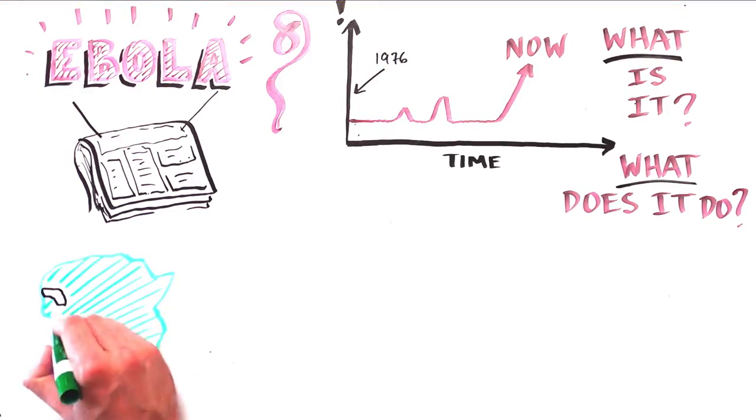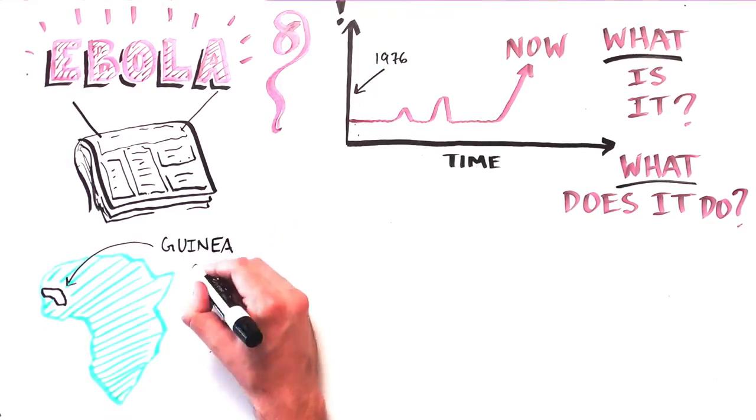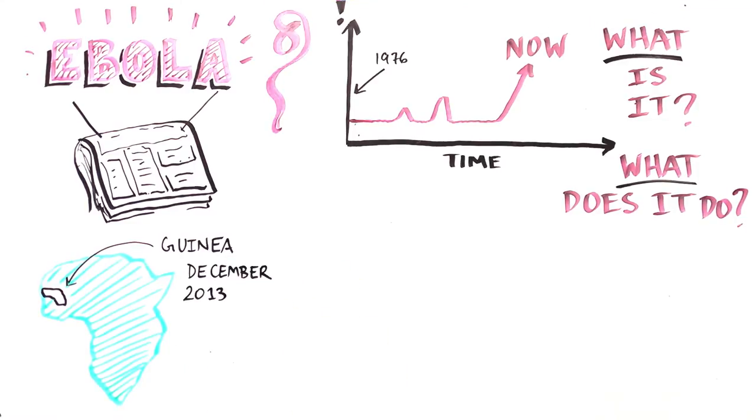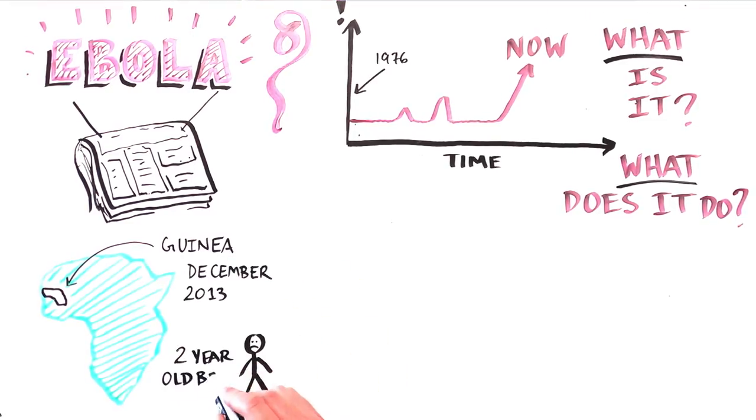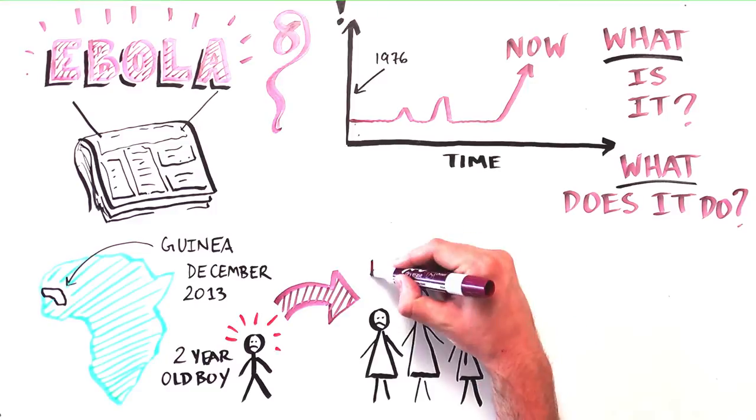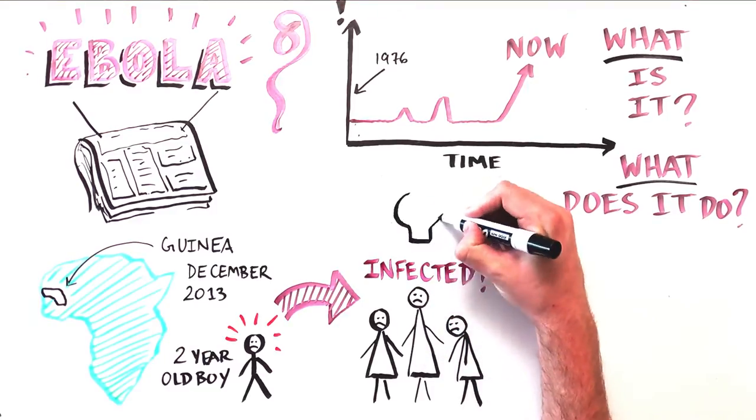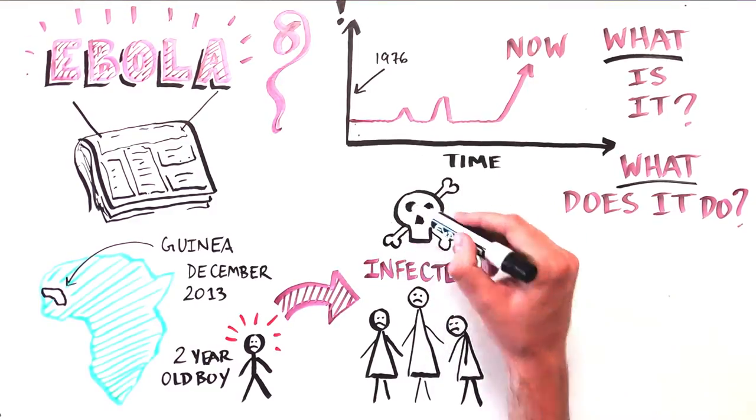The current Ebola outbreak is thought to have started in Guinea, West Africa, in December 2013 when a two-year-old boy died of the virus. His mother, sister, and grandmother were later diagnosed with Ebola and died of the disease.